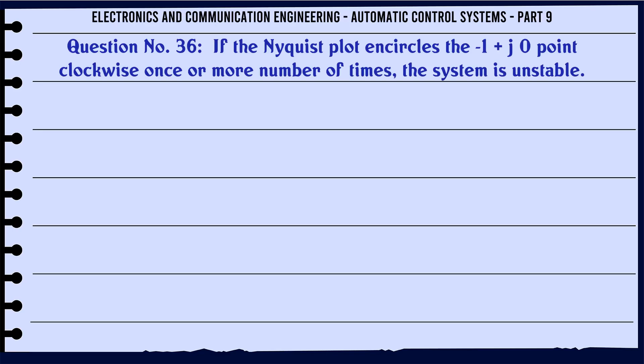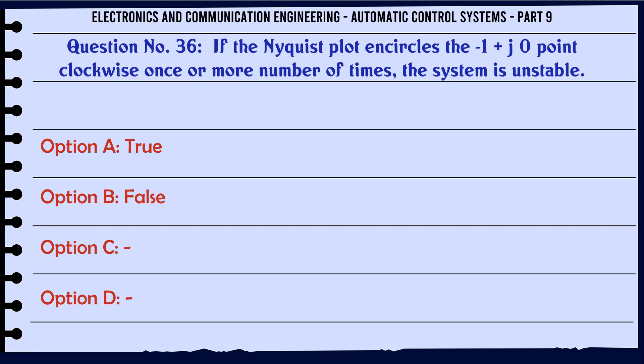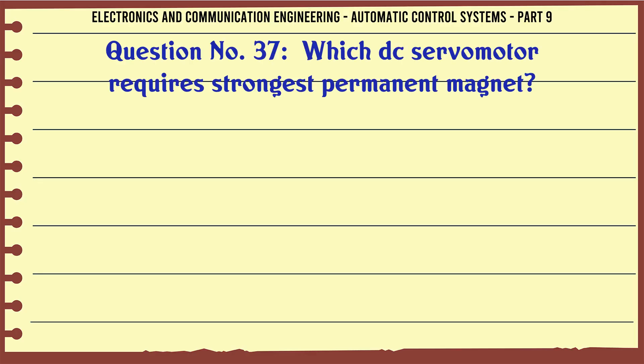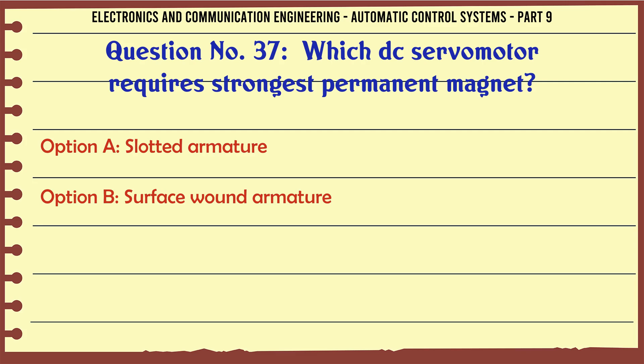If the Nyquist plot encircles the -1 + j0 point clockwise once or more times, the system is unstable. A. True, B. False. The correct answer is: True.